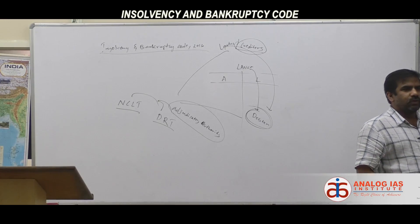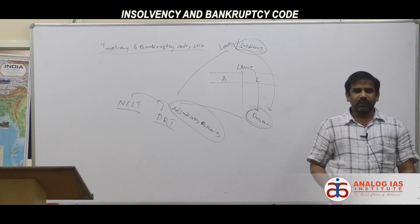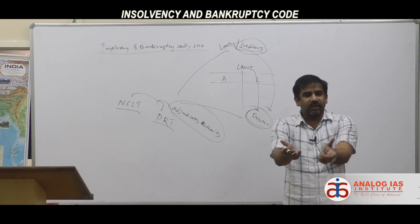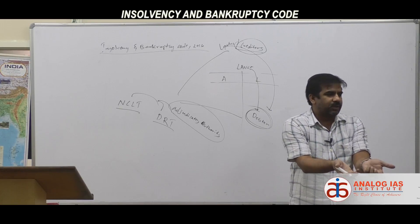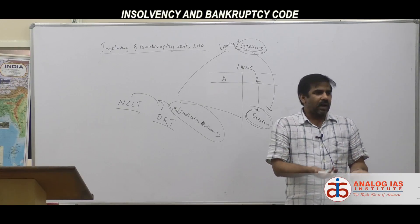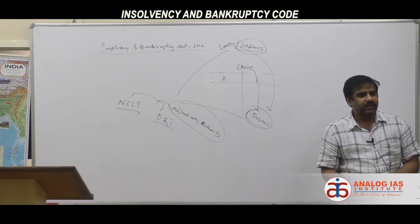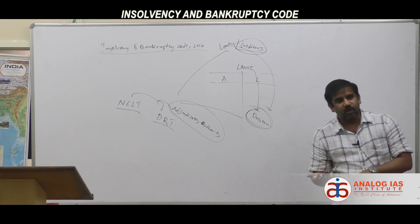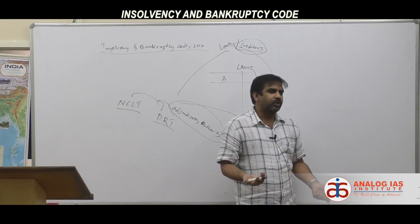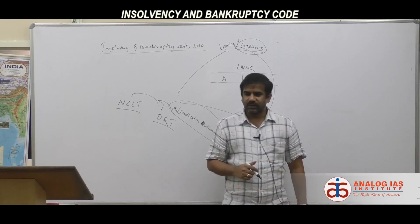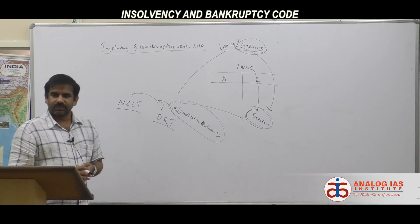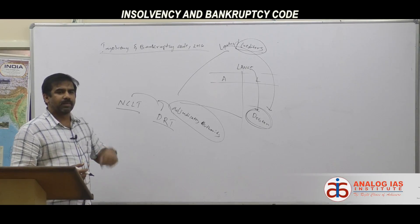If it is a company, you approach the National Company Law Tribunal (NCLT). A creditor can approach saying the company is not repaying principal or interest and seek recovery. Alternatively, the debtor — the company itself — can approach, saying its assets are deteriorating and liabilities are increasing and that it is unable to repay the loan.